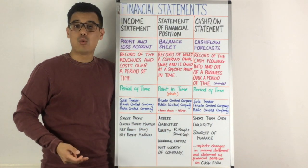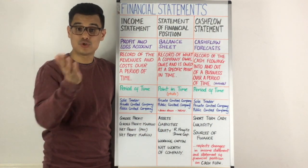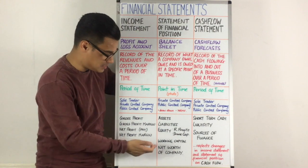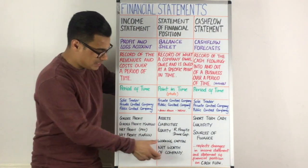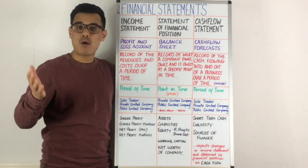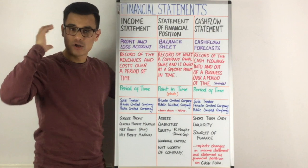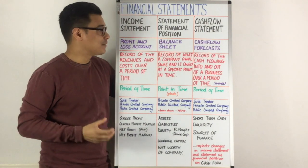You can also find out your working capital on it, being the difference between your current assets and your current liabilities. And finally it will show you the net worth of the company, so you can see how much the net worth of the company is.